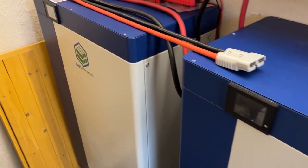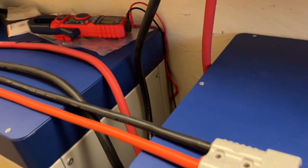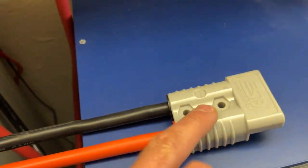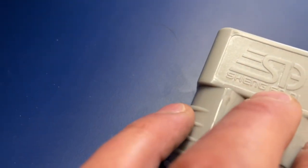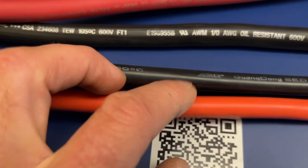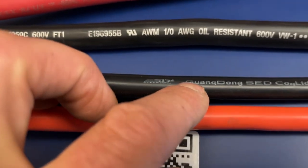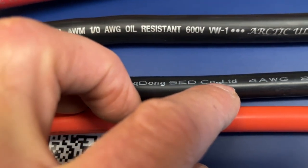Alright, here's a little review on the cables that Big Battery decided to use. I was talking about this in another video. This is the original cable with the Anderson 175 connector made by whoever - Shangdi, I don't know what that means. This is Longdong SED Co Limited, so I guess that's the company name.